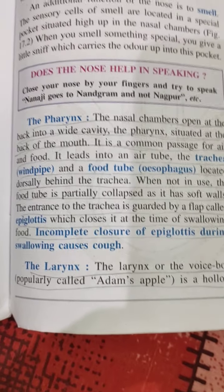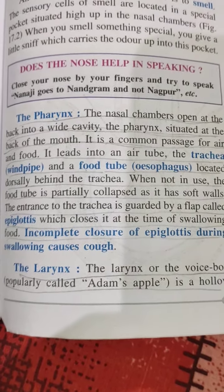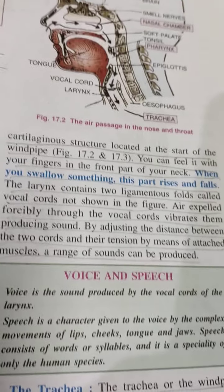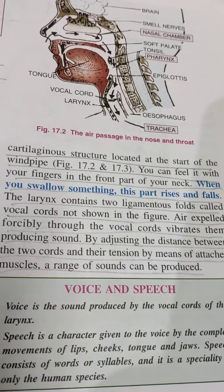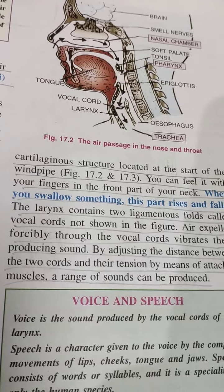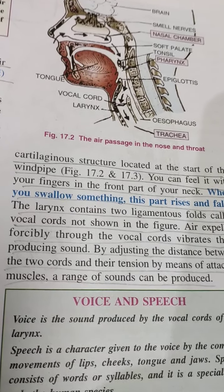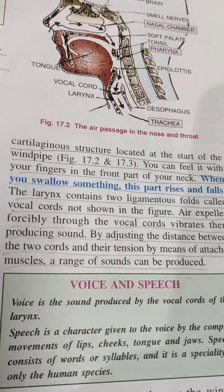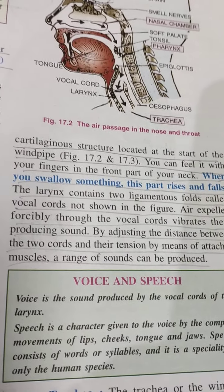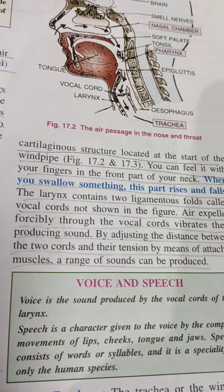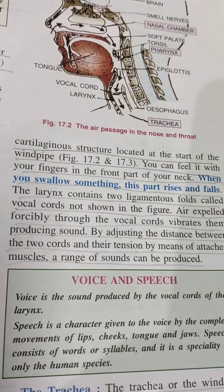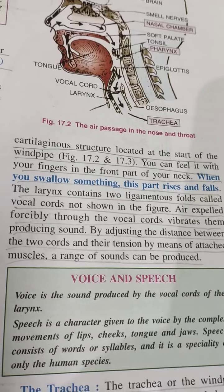The next part is the larynx, also known as the voice box or the Adam's apple. It is a cartilaginous structure located at the start of the windpipe. You can feel it with your fingers in the front part of your neck — when you swallow something, this part rises and falls. It contains two ligamentous folds called vocal cords. Air expelled forcibly through the vocal cords vibrates them, producing sound.